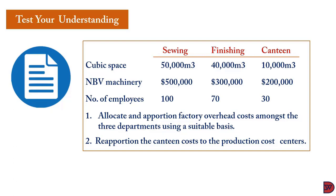The number of employees: sewing department has 170, finishing has 30, and canteen has 30. We are to allocate and apportion the factory overhead cost among the three departments using suitable criteria, and also to reapportion the canteen cost to the production cost centers.